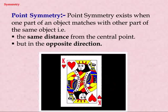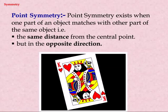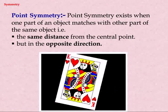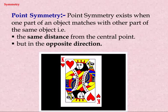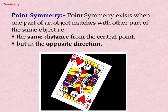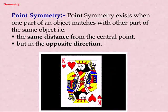Point symmetry: point symmetry exists when one part of an object matches with another part of the same object that is the same distance from the central point.